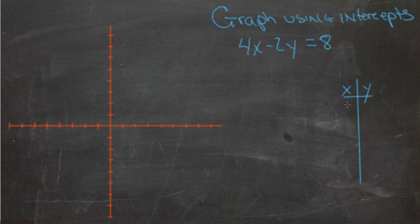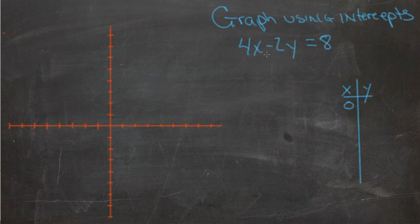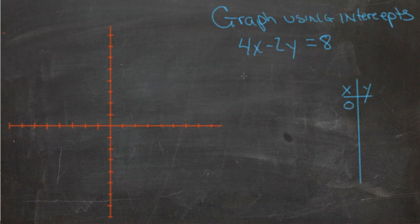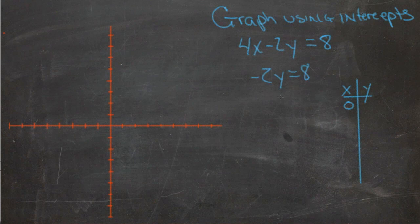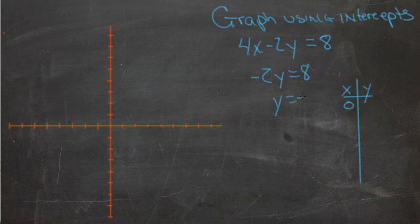And then when x is 0, this is interesting because both variables are on the same side. So we can see when x is 0, the x term just goes away. So we get negative 2y equals 8. Divide by negative 2 and we get y equals negative 4.